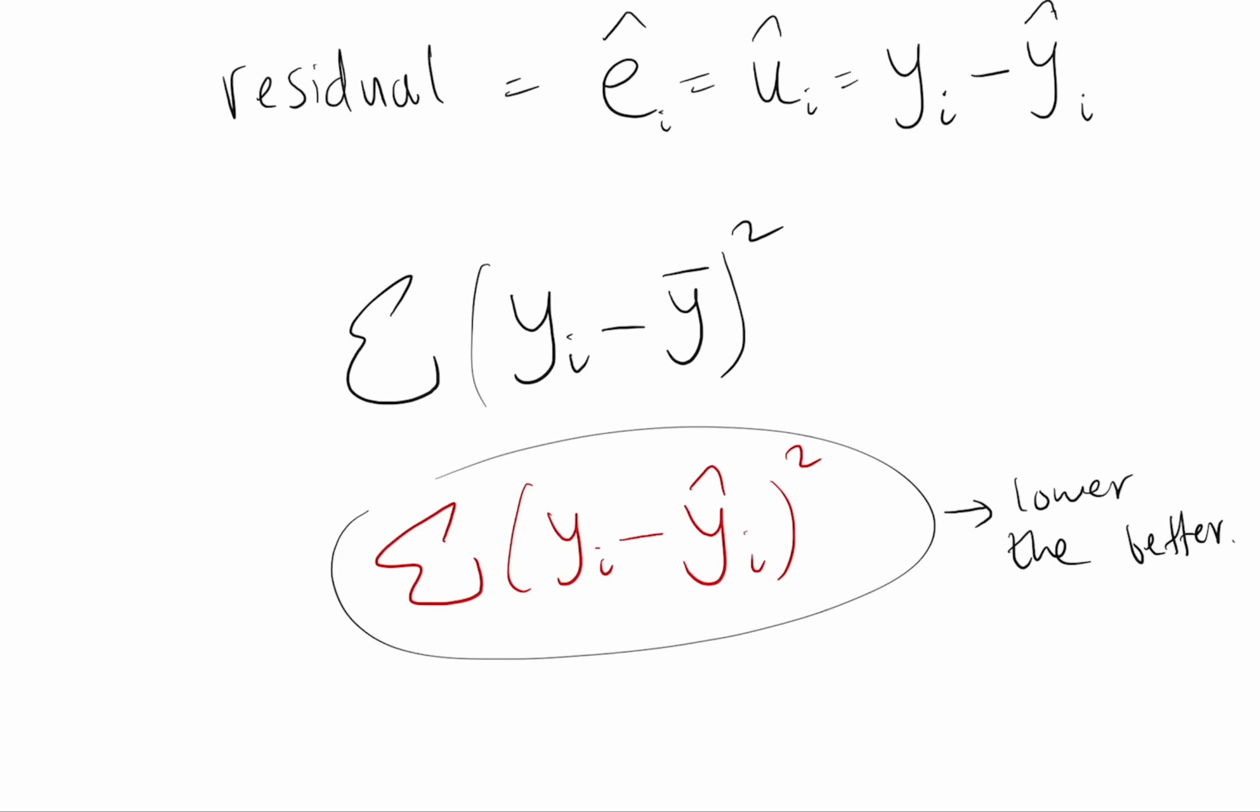And you wouldn't ever do worse than just guessing the y-bar. I mean, you always have the option if you were creating a regression line, you always have the option to just guess the average if that's really the best thing to do. But so you want to improve on that. So how much you've improved on that is what r-squared is looking at.